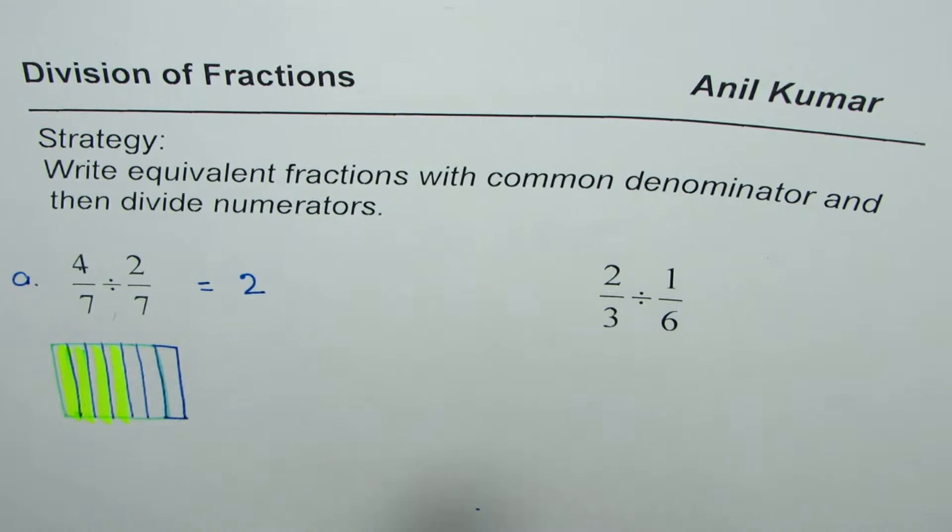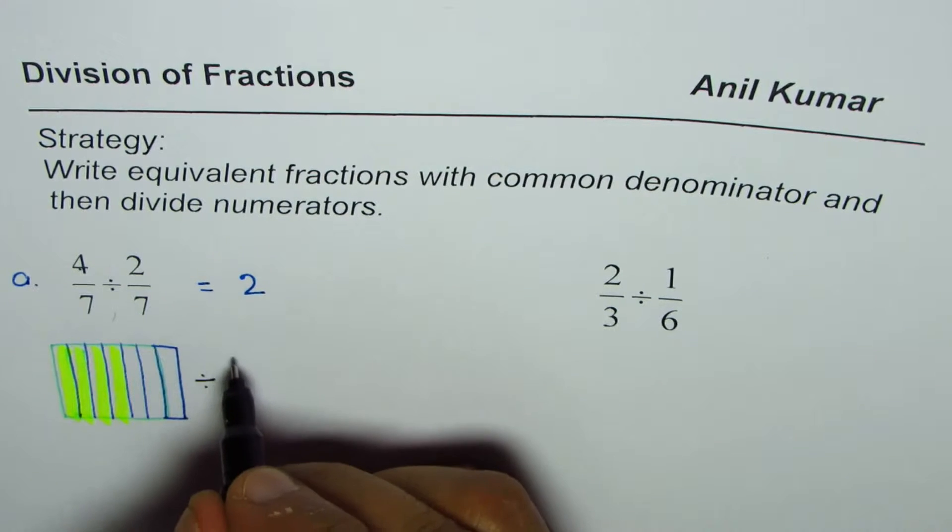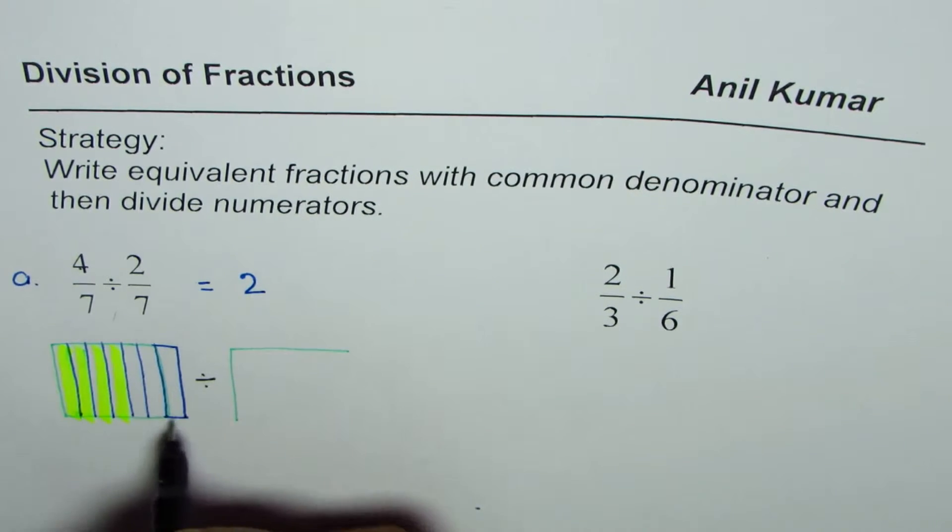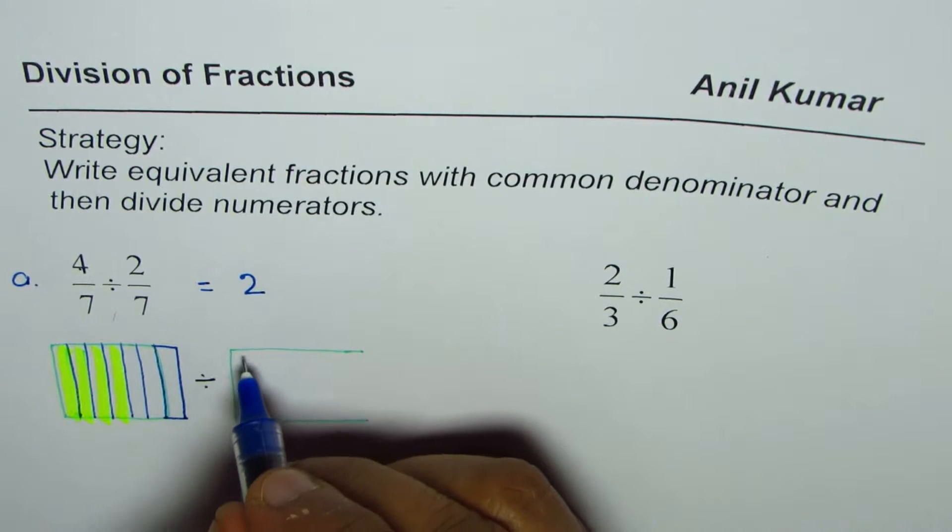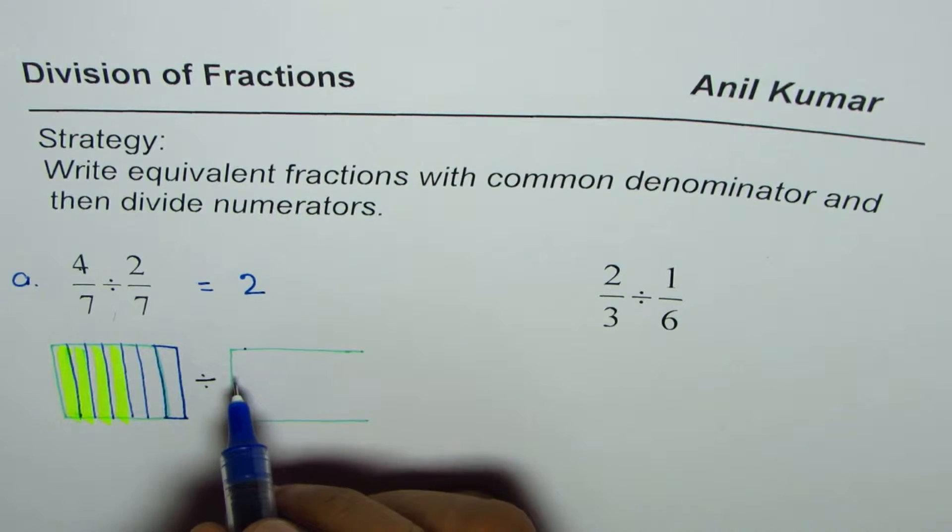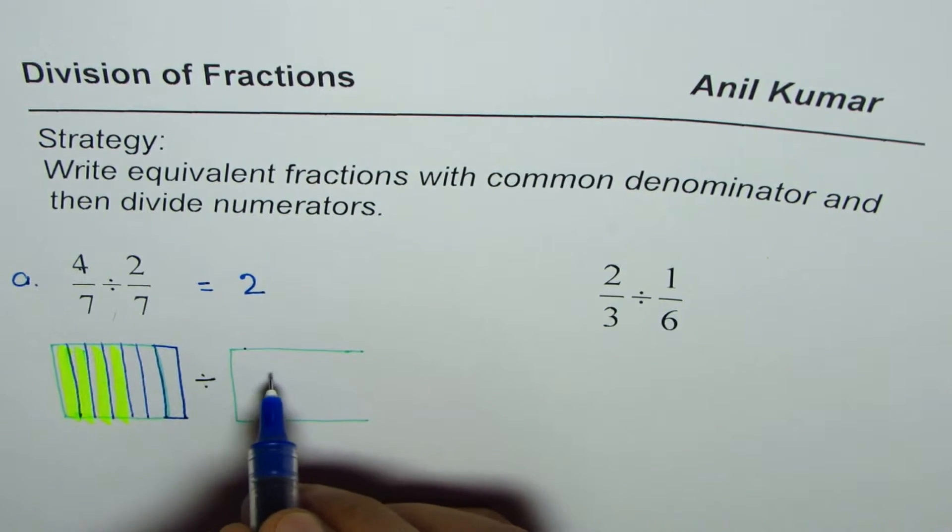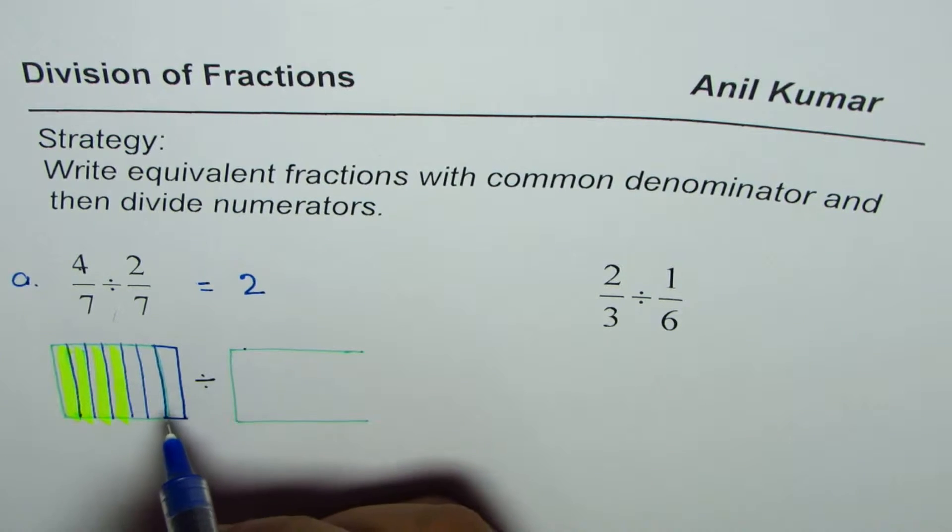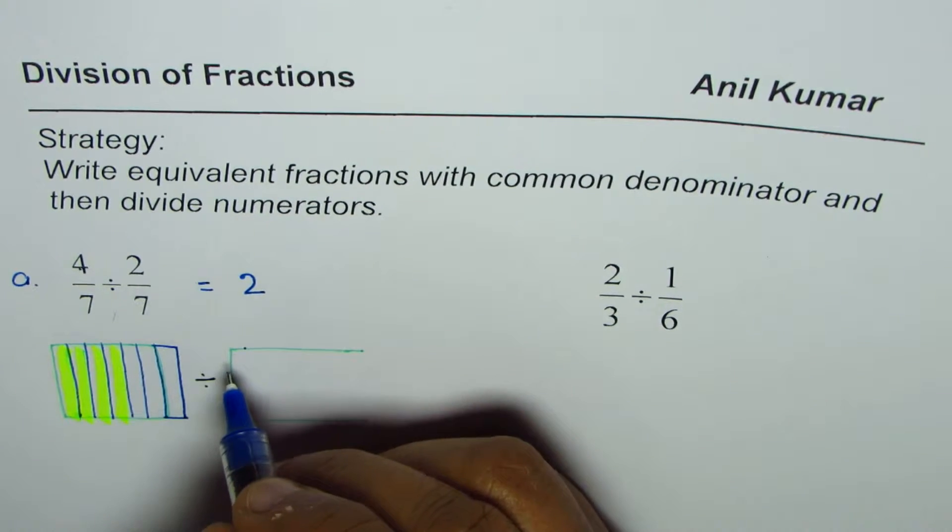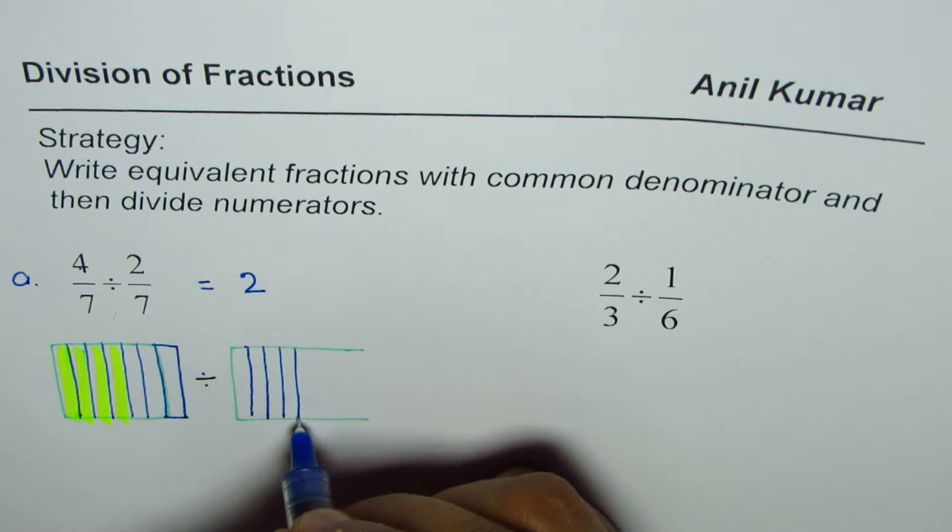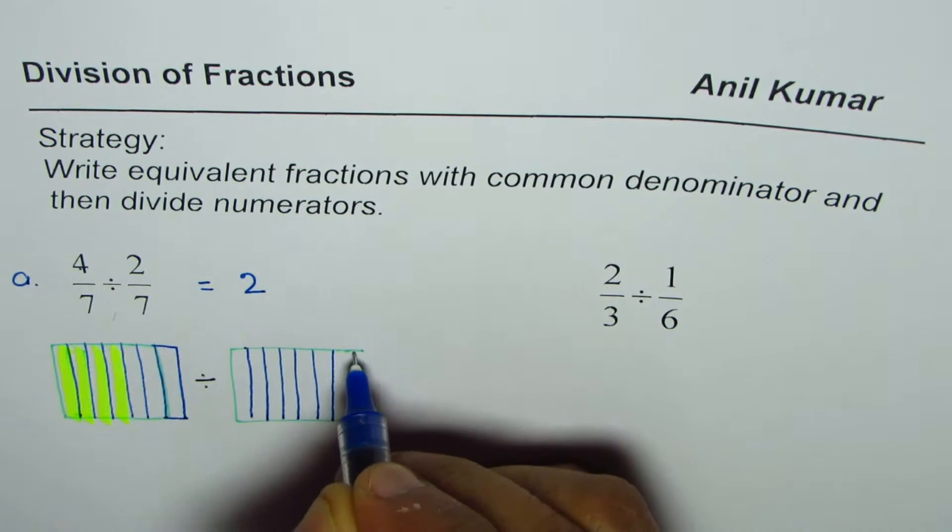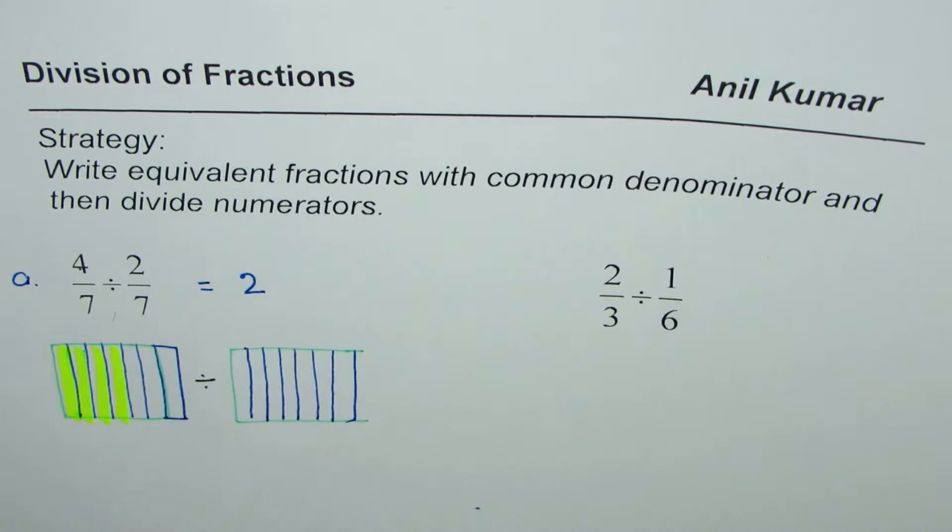We have to divide this by 2 over 7. So we'll make another box exactly similar to the one which we have just drawn. So let me divide it into 7 equal parts. We could also divide row-wise. Anyway it's one and the same thing. We can divide it in vertical lines also. So we have 1, 2, 3, 4, 5, 6, and 7.